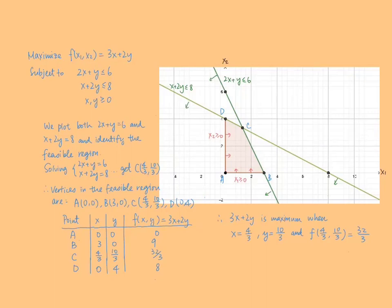First, we observe that for this linear programming problem with two variables, we can use the graphical method to solve for the optimal solution. By extracting all the vertices in the feasible region and comparing their values in the objective function, we get that the objective function has a maximum value of 32 over 3, which occurs at the point x equals 4 over 3 and y equals 10 over 3. We can refer to the following deduction and the corresponding graph.